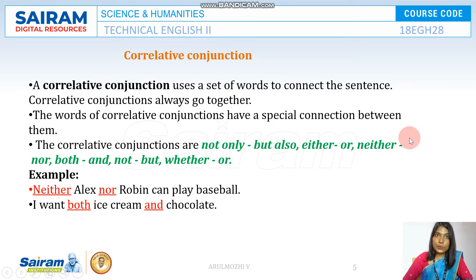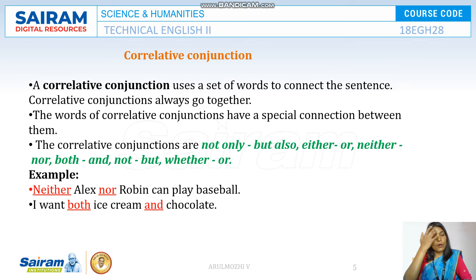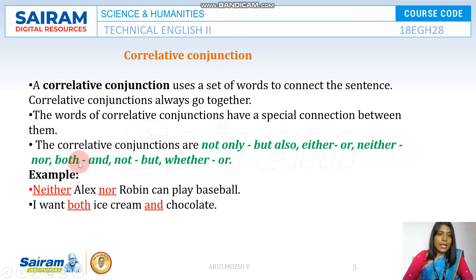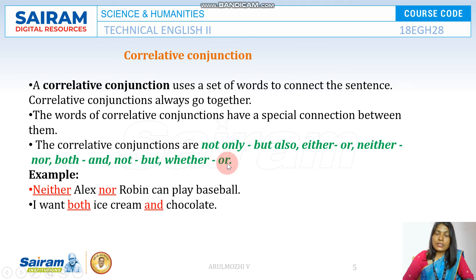"Neither...nor" can connect two nouns or two sentences. For example, "I neither want banana nor apple to eat" — connecting two nouns — or "I neither want to watch a movie nor do I want to play." "Both...and" connects two nouns: "Both Rom and Kala went to the party" or "I want both apple and banana." "Whether...or" connects two sentences or two words: "Please tell me whether you want it or not."